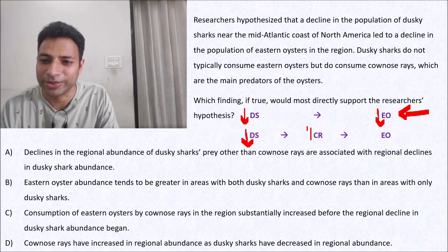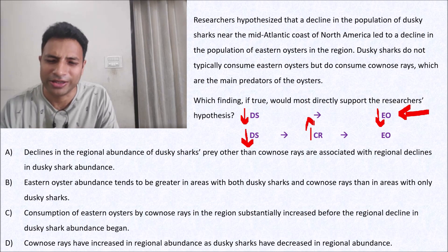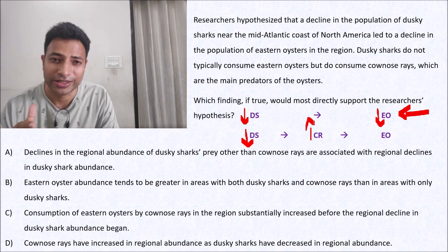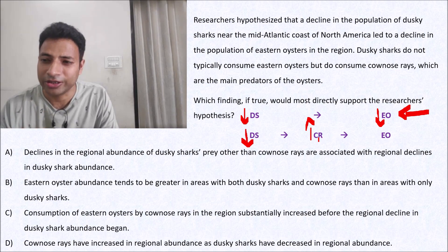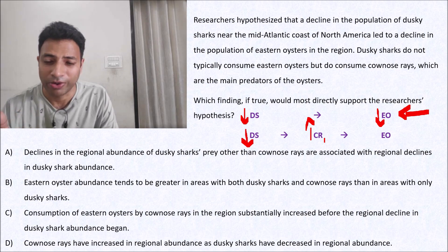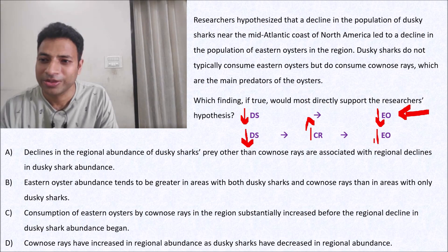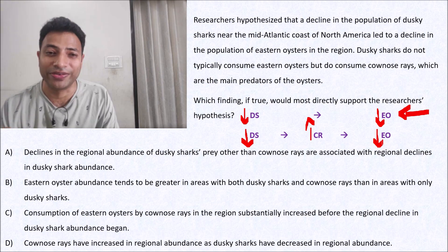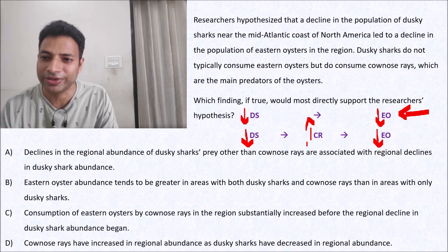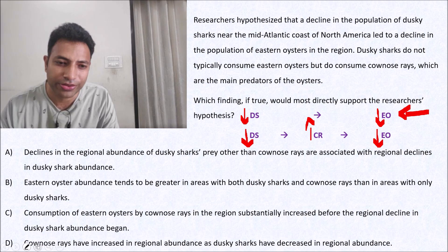Cow nose rays will increase in number. If the predator's population is going down, then cow nose ray population will go up because now they don't have anyone to eat them. Now, if their population increases, what will happen? Eastern oysters population will decrease. So you can see everything is given except for one thing.